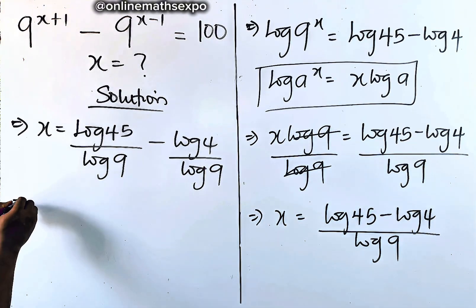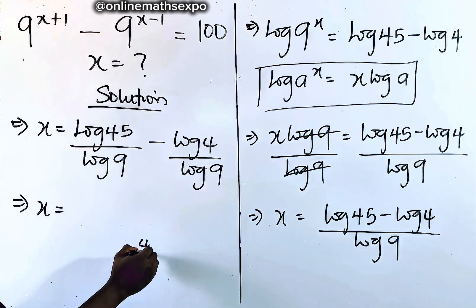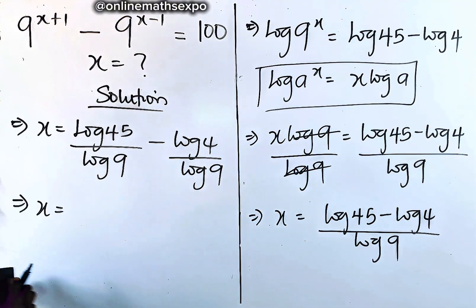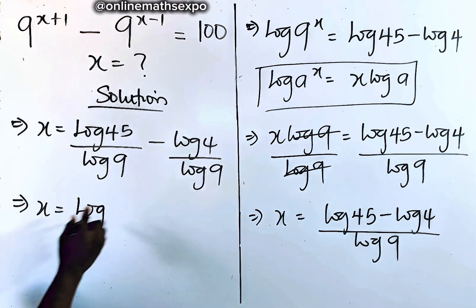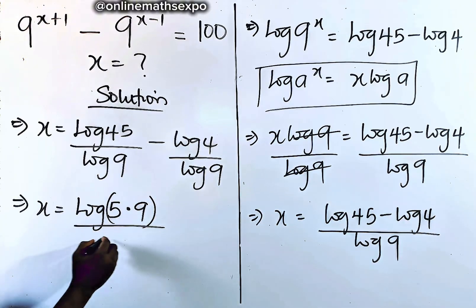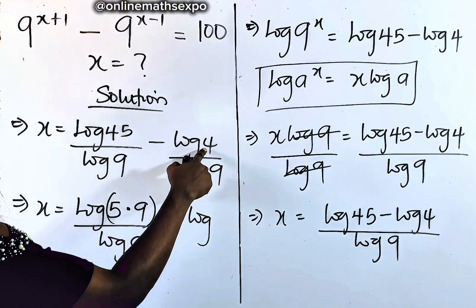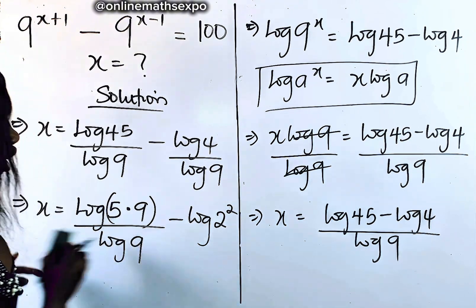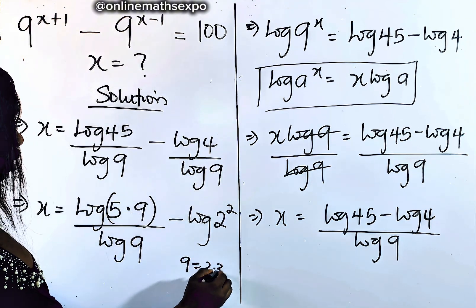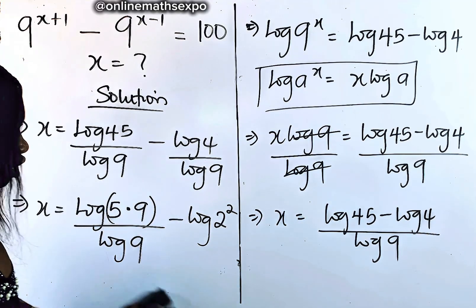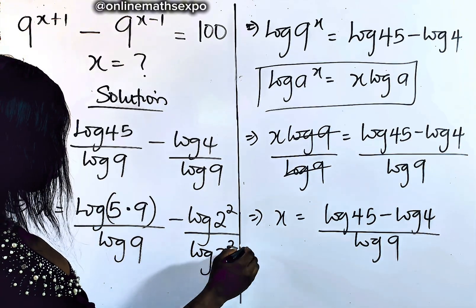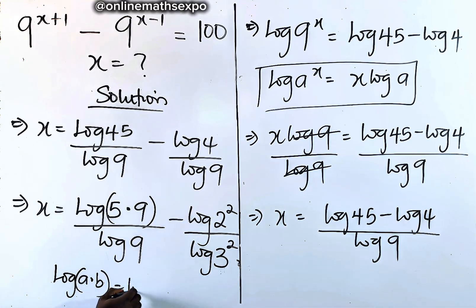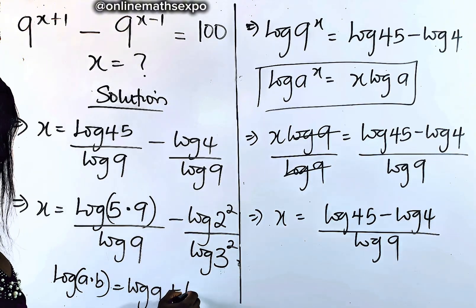This is not yet simplified. So we have x equal to log of 45 divided by log of 9, minus log of 4 divided by log of 9. Now 45 is the same as 5 multiplied by 9, and 4 is the same as 2 squared, and 9 is also 3 squared. So we rewrite for easy simplification: log of 5 times 9, divided by log of 3 squared, minus log of 2 squared divided by log of 3 squared.